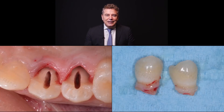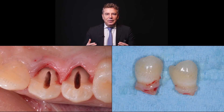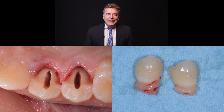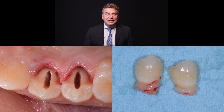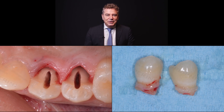Thankfully I was right, because the most movable fragment was the palatal fragment of the two premolars on the right side of the patient. So of course you need to remove the fragment, and you can see how large the endodontic channel is because the patient is very young — only 14.